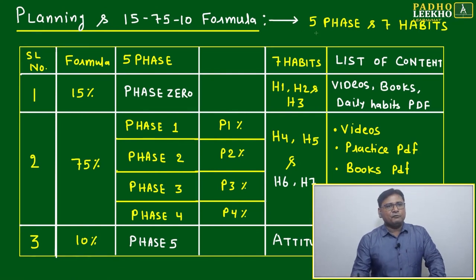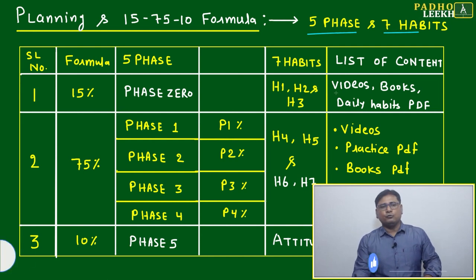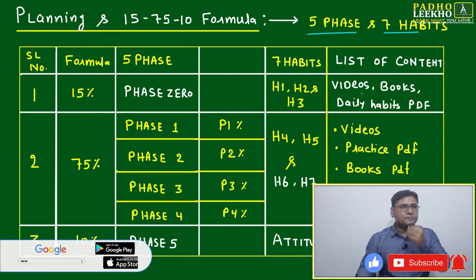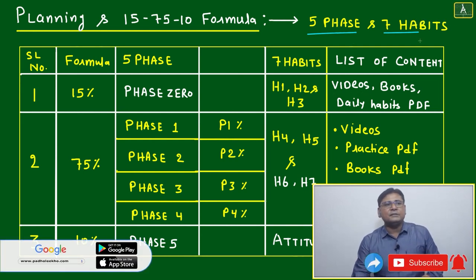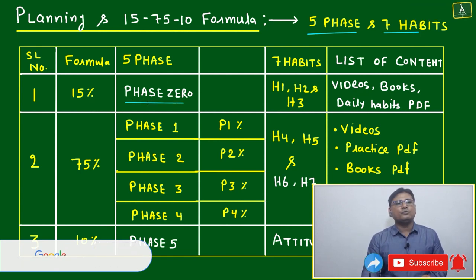Running the 15-75-10 formula, I'm combining this formula with our plan. The next seven-month plan is five phases and seven habits. In the first 15% slab, we have to go for Phase Zero.